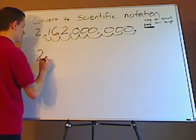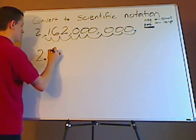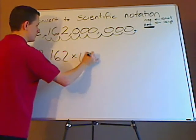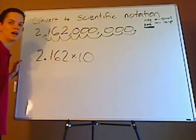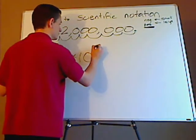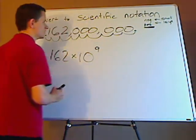So 2.162 times 10, and it's going to be a positive 9 or a negative 9? Right, it's going to be a positive 9 because it's a large number.